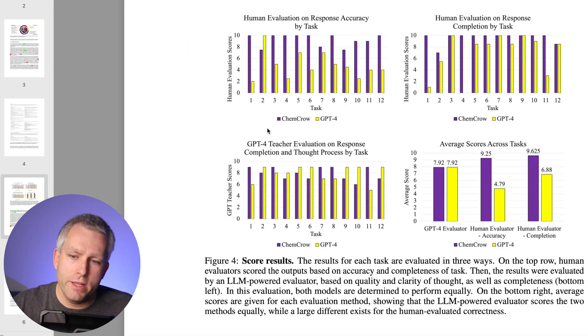And here are the results. So what they did, they tested ChemCrow and GPT on 12 different chemistry tasks. And for each of these tasks, they used human evaluators to evaluate how good is the response accuracy and completion of the task. In the purple, we have ChemCrow, and in the yellow, we have GPT-4. So they did the evaluation by humans. And they also used GPT-4 in a teacher evaluation. So GPT-4 evaluated the output from itself and also from ChemCrow. And you can see the evaluation from GPT-4 is a lot more generous than the evaluation from humans.